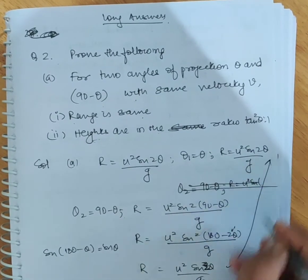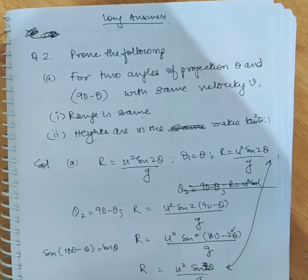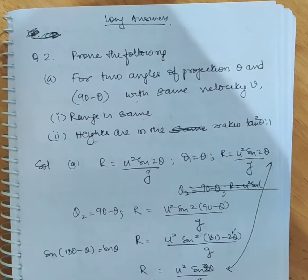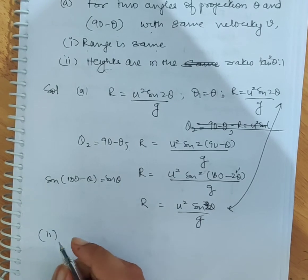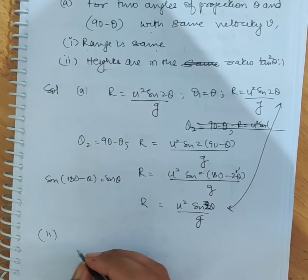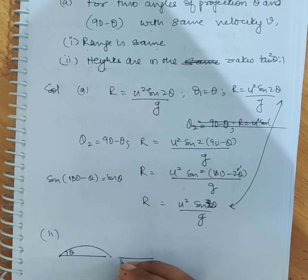So we can compare the two and we can see both are equal. So the ranges are equal. Now we can write the second part for the height ratio.